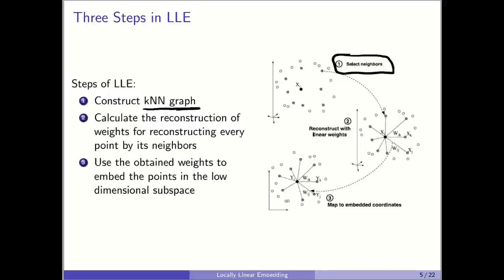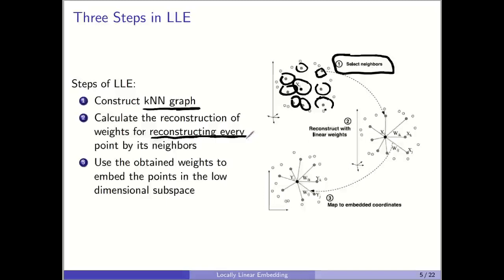For every point x_i, it finds its k nearest neighbors. In this figure, k is 8. So it finds the nearest neighbors of each point. Then in step 2, it finds how each point is reconstructed by its neighbors — we want to reconstruct every point by a linear combination of its neighbors.